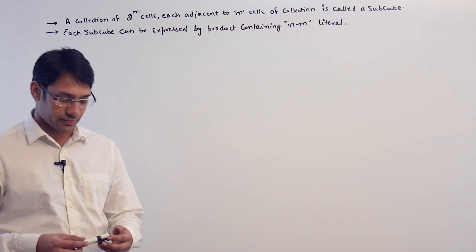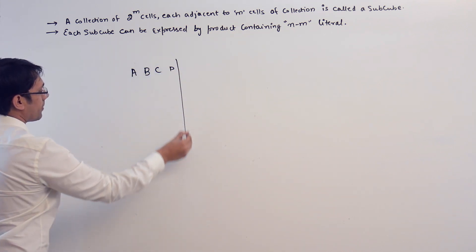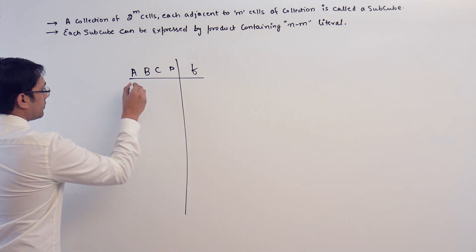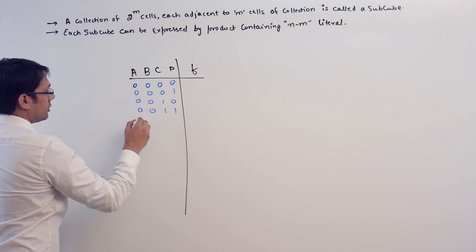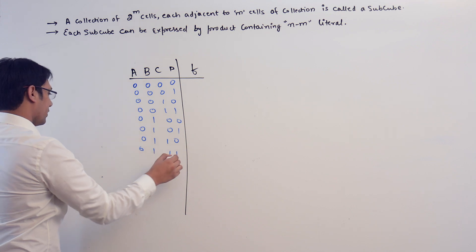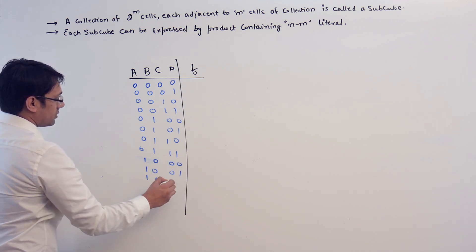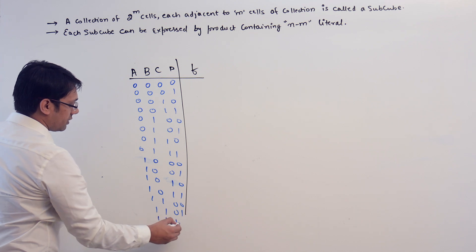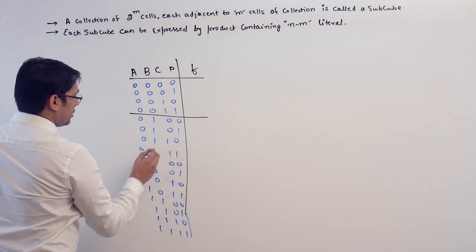Now let us take a four-variable function with variables A, B, C, and D. The combinations of ABCD go from 0000 through 1111, giving a total of 16 combinations.